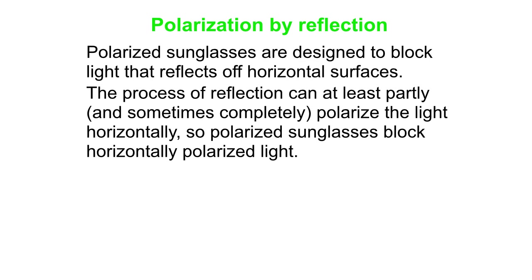How do we align the transmission axis of the lenses in polarizing sunglasses? They're aligned specifically to block the light that reflects off horizontal surfaces, such as the surface of a pond or lake. Light from the sun reflecting off a horizontal surface can be at least partly polarized — and if the angle is just right, it can be perfectly linearly polarized. So the transmission axis is aligned to allow light with vertical e-field vectors to pass through to your eye, but block light with horizontal e-field vectors, reducing the glare off that pond or lake.